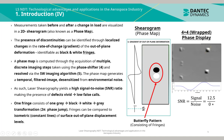A phase map is computed through the acquisition of multiple discrete imaging steps taken using the phase shifter and resolved by the software imaging algorithm. The phase map generates a temporally filtered image desensitized from environmental noise. As such, Laser Shearography yields a high signal-to-noise ratio, making the presence of defects vivid and yielding low false calls. One fringe consists of one grey-to-black-to-white-to-grey transformation, also known as a 2π phase jump. Fringes can be compared to isometric or constant lines of surface out-of-plane displacement levels.